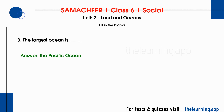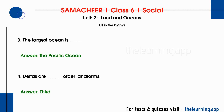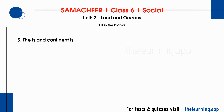Fourth question: deltas are blank order landforms. Correct answer is third order landforms. Landforms are classified as first order (continents and oceans), second order (mountains, plateaus, plains), and third order (delta, valleys, sand dunes). Fifth question: the island continent is blank. Correct answer is Australia.